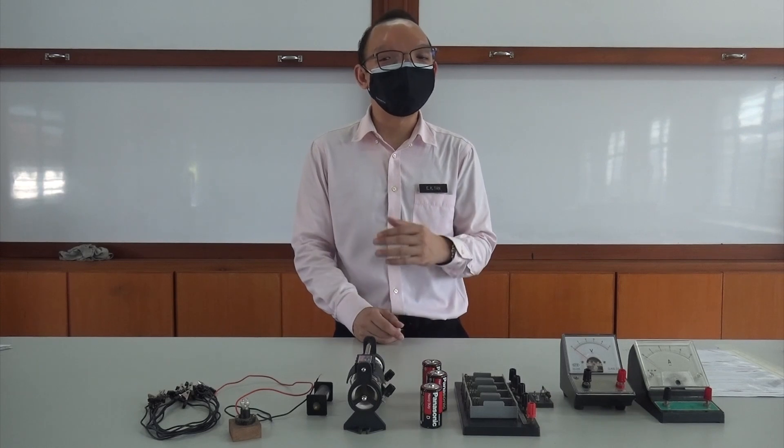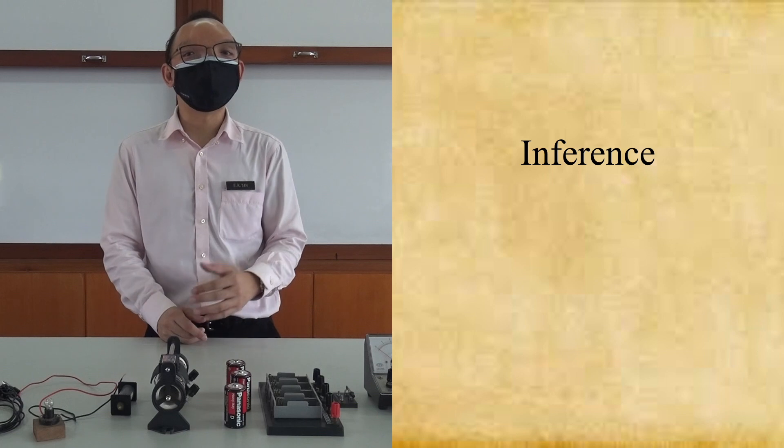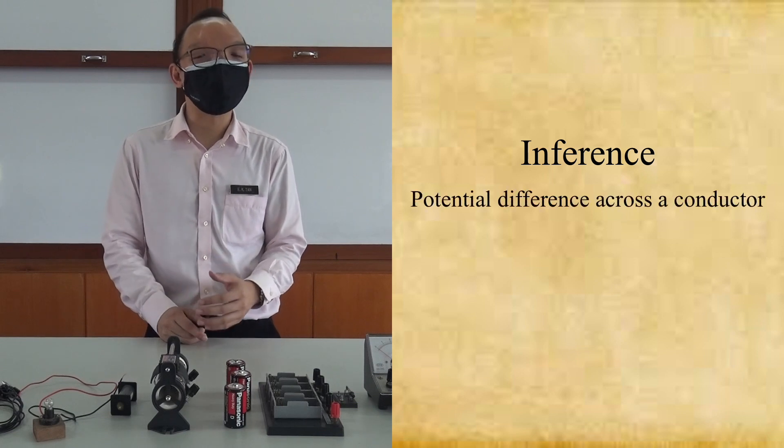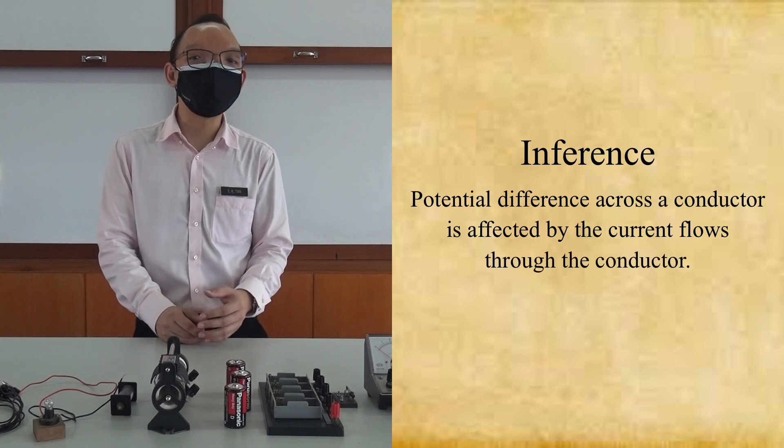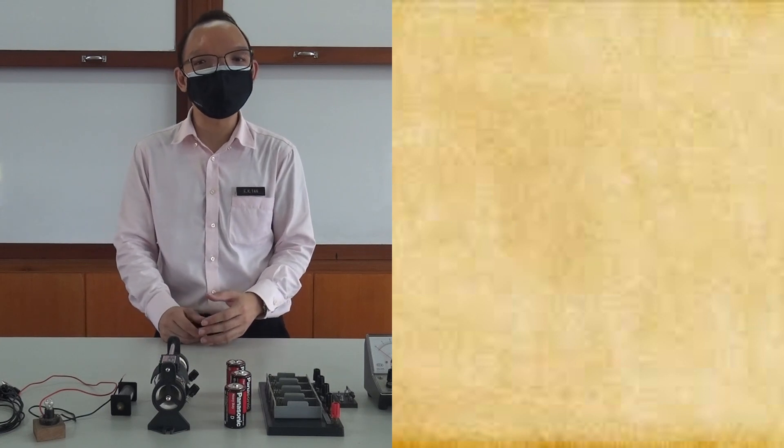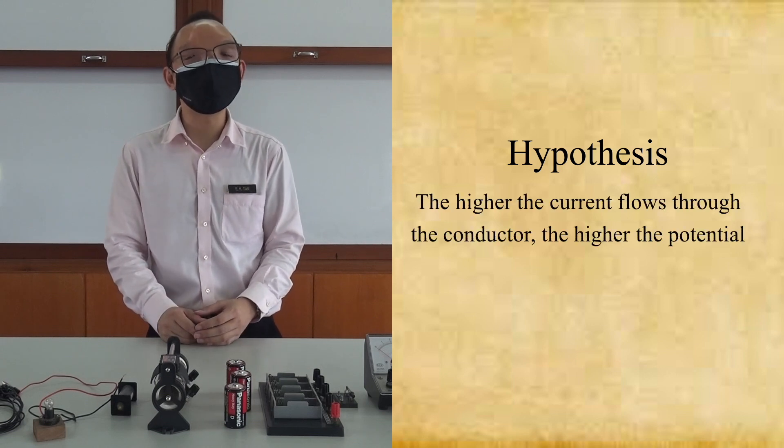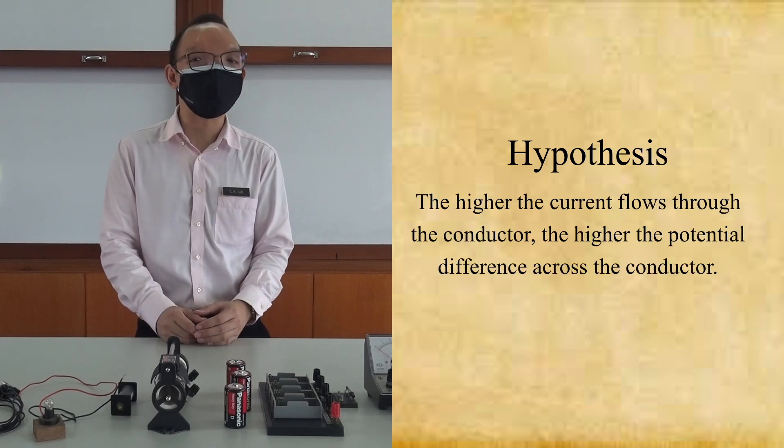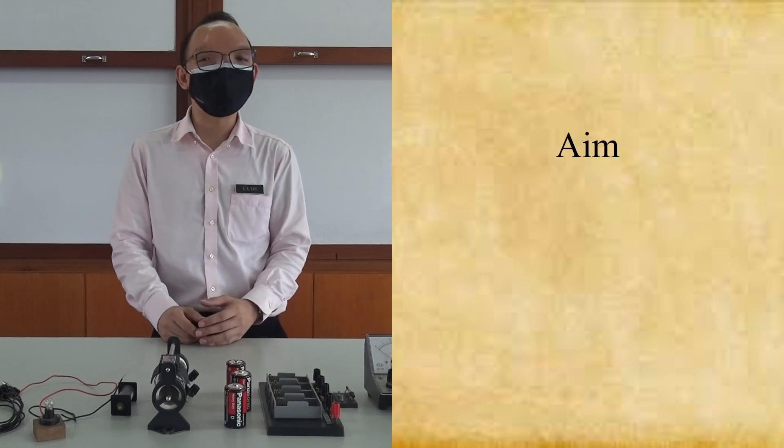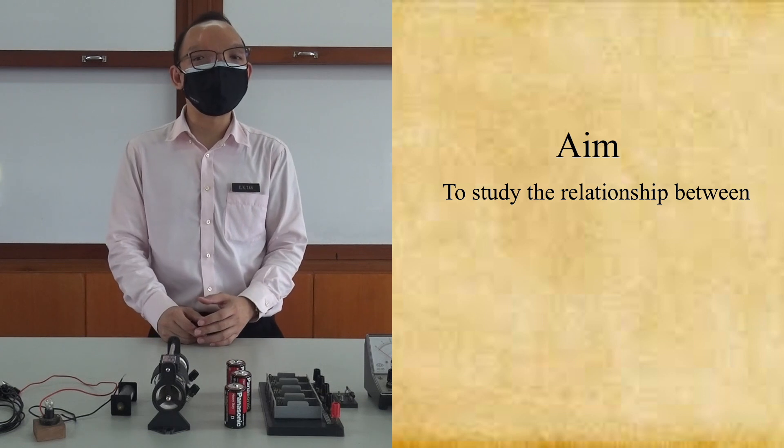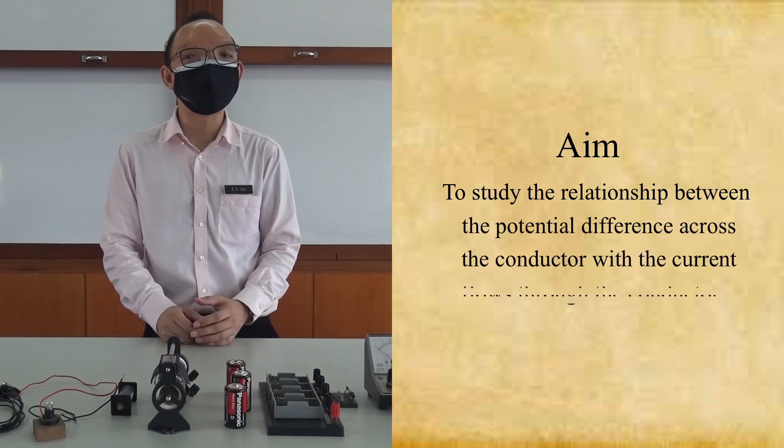For the difference of this experiment, the potential difference across the conductor is affected by the current flowing through the conductor. Hypothesis: the higher the current flowing through the conductor, the higher the potential difference across the conductor. The aim of this experiment is to study the relationship between the potential difference across the conductor with the current flowing through the conductor.